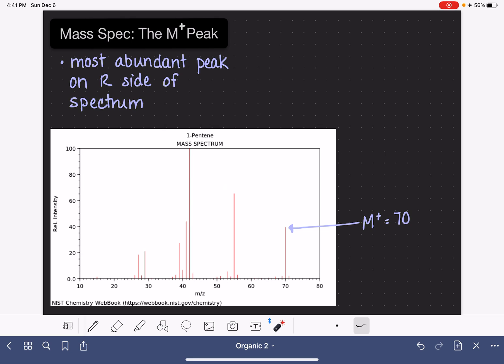So what does the M plus peak represent? Well, the M plus peak is also referred to as the molecular ion, because it is the peak that corresponds to the molecule making it all the way through the mass spec instrument without falling apart at all. Let me draw a picture of what I mean by that. This particular spectrum is for 1-pentene.